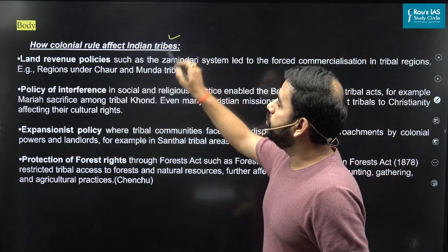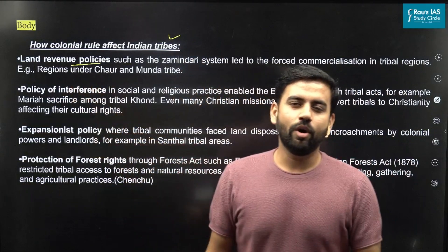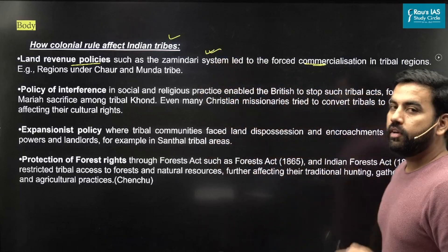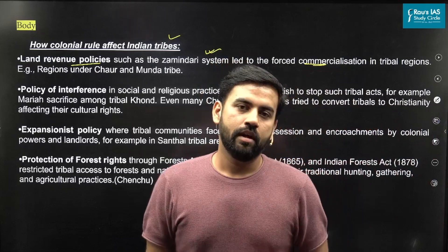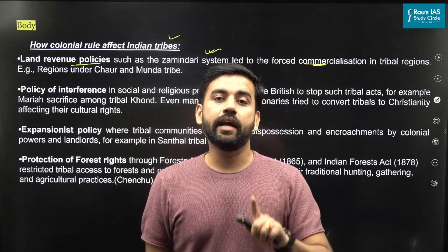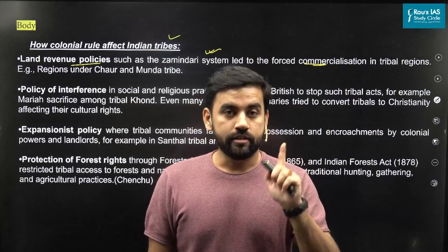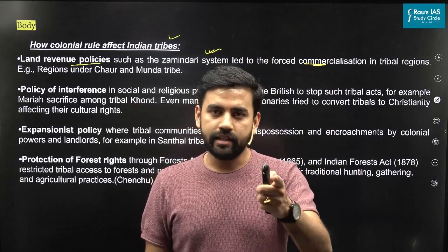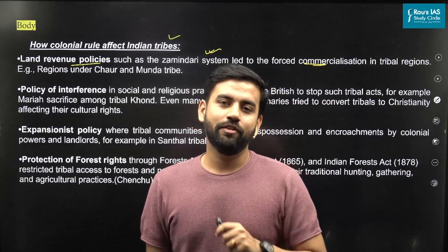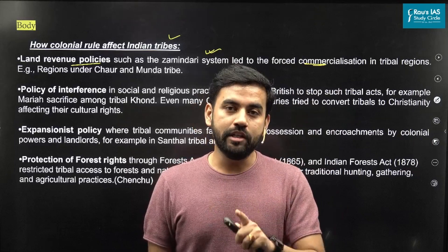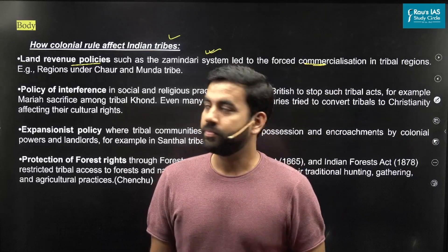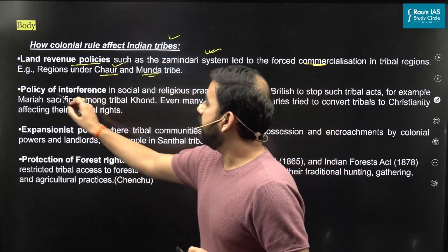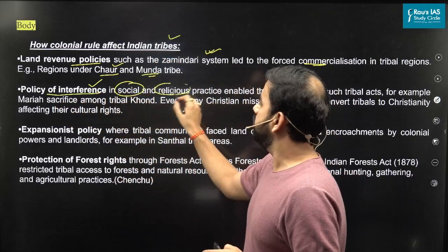Now, how did colonial rule affect Indian tribes? Number one: the land revenue policy. Because of the expansion of the Zamindari system, tribes were actually forced to commercialize their crops. Commercialization of agriculture led to more diversity but also more uncertainty, because commercial crops — like cotton — cannot substitute food crops. So if there was a famine and a farmer had not grown wheat or rice, his family would not survive. This is why regions under the Chor and Munda communities revolted against the British.